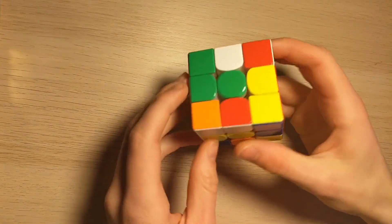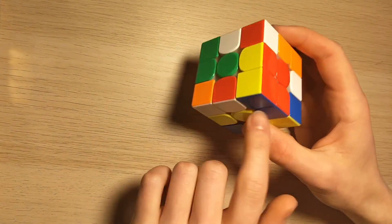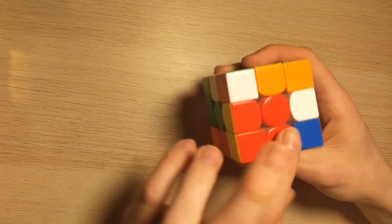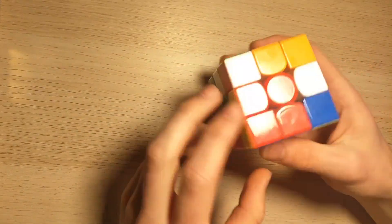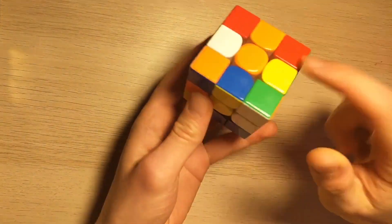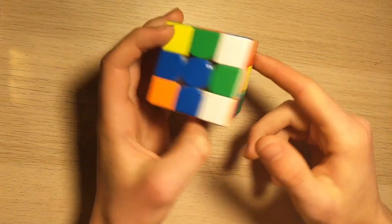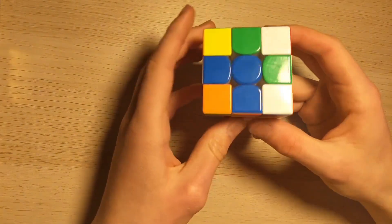So the first thing I noticed when I started inspecting was this 2x2 block on red, so I started looking for the other two pieces and I found them here and here, and I could easily connect them by doing u' b2.